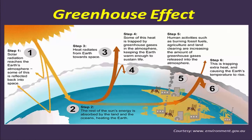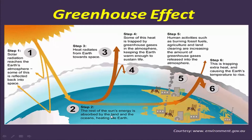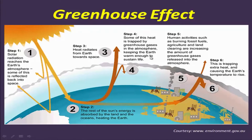This diagram explains the greenhouse effect in more detail. The first step is that solar radiation reaches the earth's atmosphere, and some of this is reflected back into space. Whatever reaches the earth's surface is absorbed by the land and oceans, heating the earth. Heat then radiates from the earth towards space, but not all of it escapes — some heat is trapped by the greenhouse gases in the atmosphere, keeping the earth warm enough to sustain life.